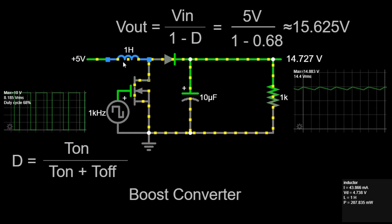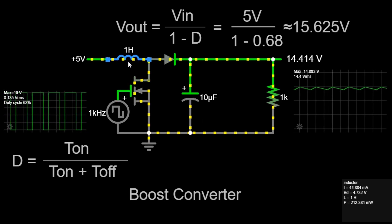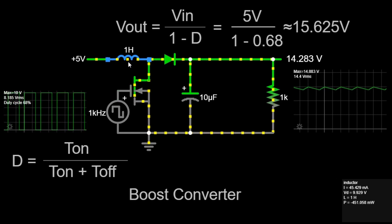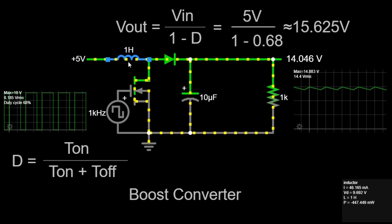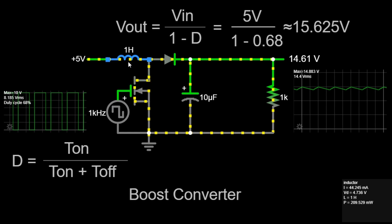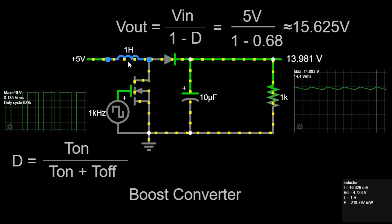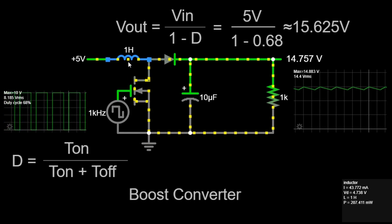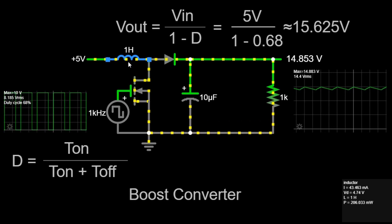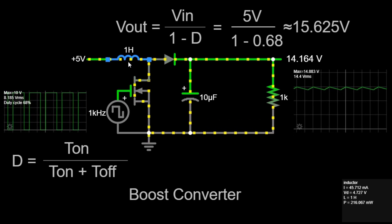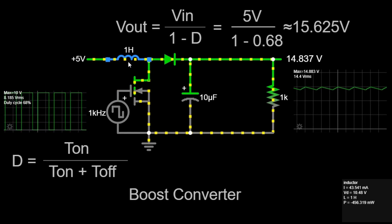Second, we have the inductor with a value of 1 Henry. This component stores energy in its magnetic field when current flows through it. Inductors resist changes in current. When current flows through the inductor, it creates a magnetic field, storing energy. The ability of an inductor to store energy is proportional to the inductance value and the current passing through it.